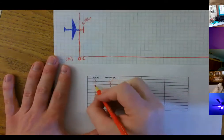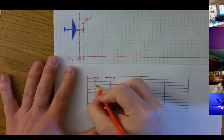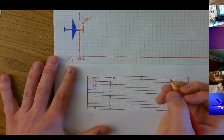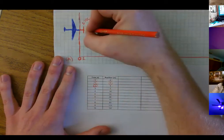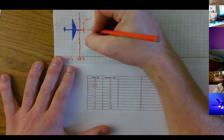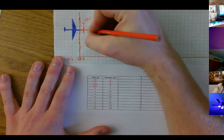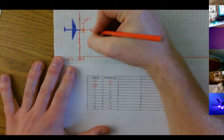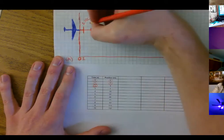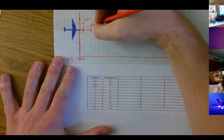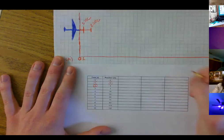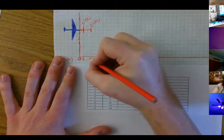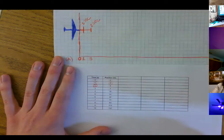Then one more second passed, so now the total time was two seconds, and it was at three meters. This is after a time of two seconds and it was at three.